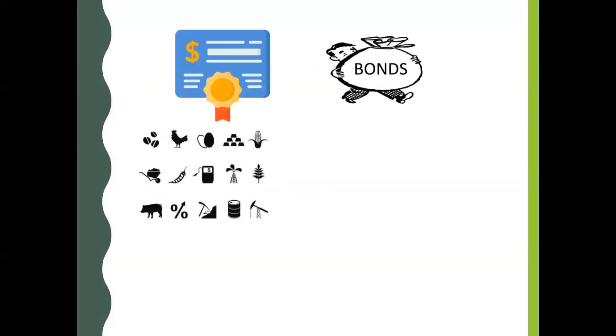The most common underlying assets for derivatives are stocks, bonds, commodities, currencies, interest rates, and market indexes.